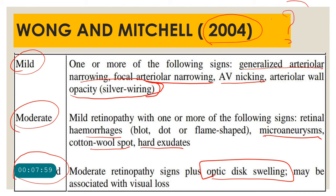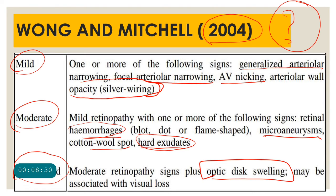To remember Wong and Mitchell: whenever papilledema is present it is grade 4 or severe hypertensive retinopathy, and in Wong and Mitchell it falls under accelerated or severe. Hemorrhages, cotton wool spots, and hard exudates, which form grade 3 in other classifications, are in the moderate category here. All remaining vascular changes — spasms, AV nicking, and silver wiring — fall under mild hypertensive retinopathy according to Wong and Mitchell.